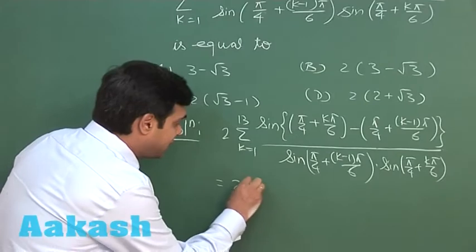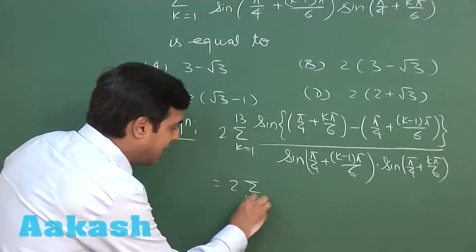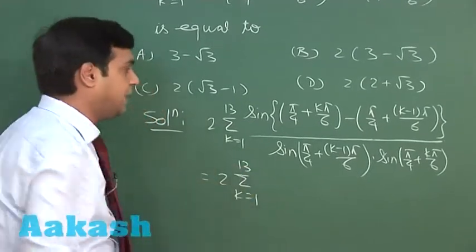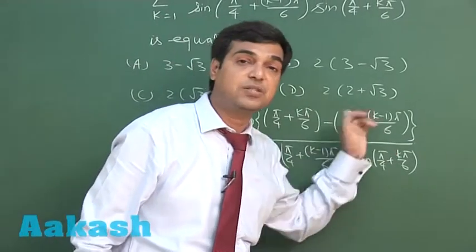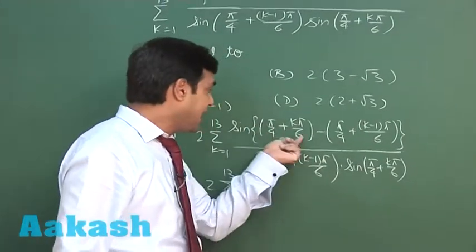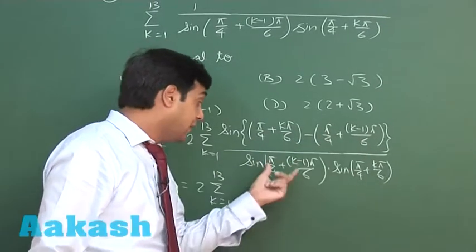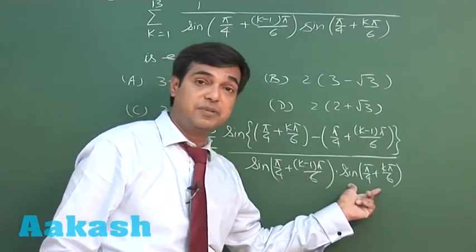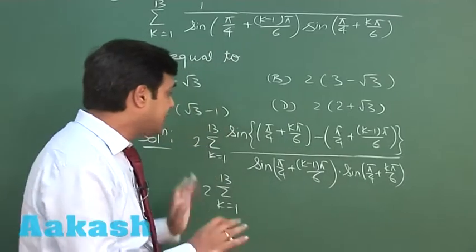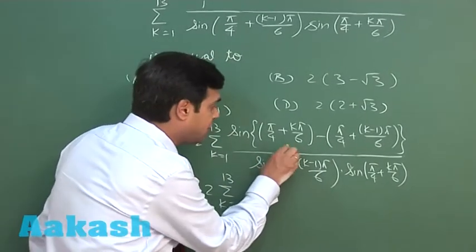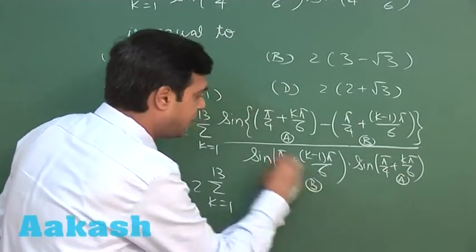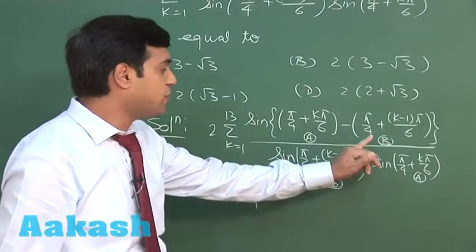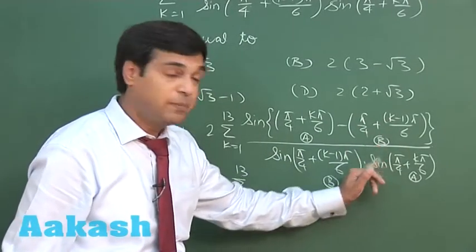This is twice summation k equals 1 to 13. This is sin(a-b), that is sin(a)cos(b) minus cos(a)sin(b). sin(a)cos(b) divided by sin(a)sin(b) term is available, right. So we can see here this is a taken, this one is taken as b, so this is actually a, this is actually b. So we have sin(a)cos(b) minus cos(a)sin(b) divided by sin(a)sin(b).